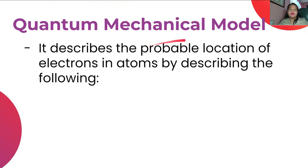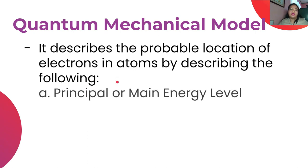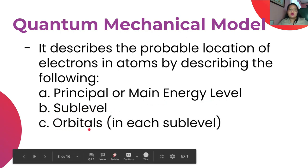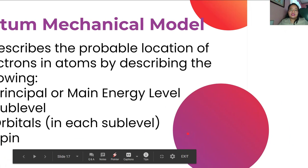The quantum mechanical model describes the probable location of electrons in atoms by describing four parts: first, the principal or main energy level; second, the sub-level; third, the orbitals in each sub-level; and fourth, the spin of the electron.